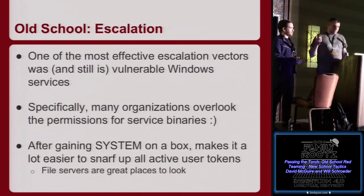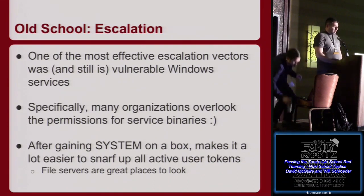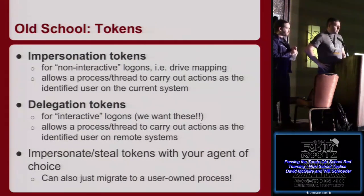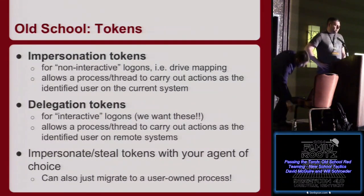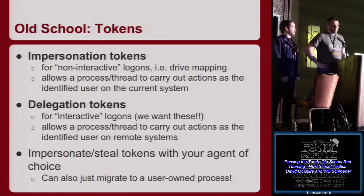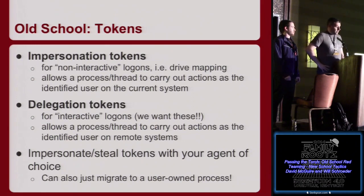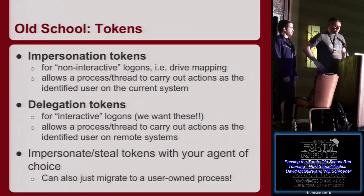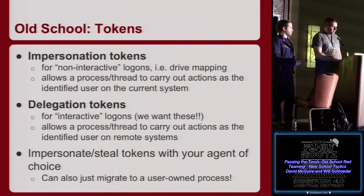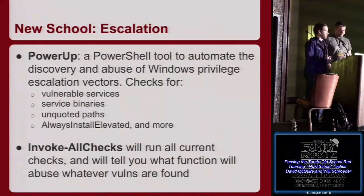Once you get system, you want to get user credentials or user access so you can move around to different systems on the network. We primarily do that through tokens. What we really want is delegation tokens — meaning somebody logged into the box and gave us nice access we can migrate elsewhere. There's lots of ways to attempt this, like calling the help desk to get them to log into the box. Once we do that and get those tokens, pretty much every framework — commercial or otherwise — has the functionality to steal Windows tokens. The most popular is Incognito. You can also just migrate to a user's process as an easy way to grab their token.